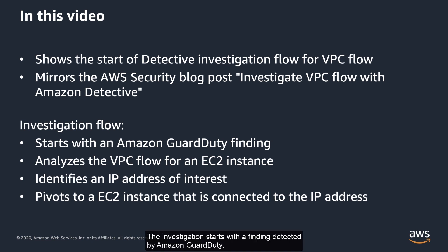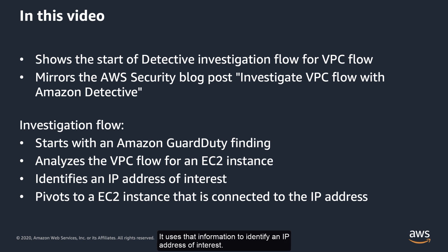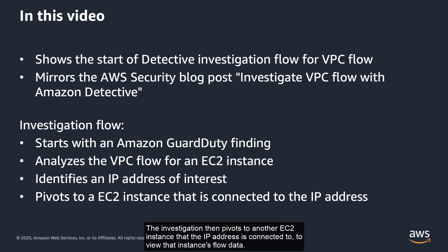The investigation starts with a finding detected by Amazon GuardDuty. It analyzes the VPC flow for the affected EC2 instance and uses that information to identify an IP address of interest. The investigation then pivots to another EC2 instance that the IP address is connected to, to view that instance's flow data.